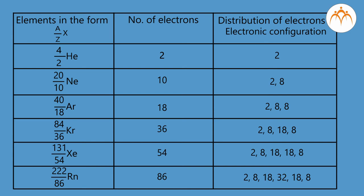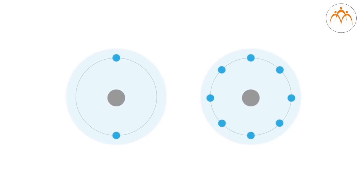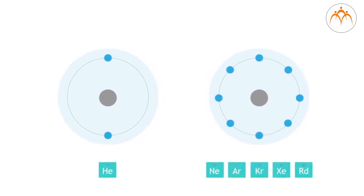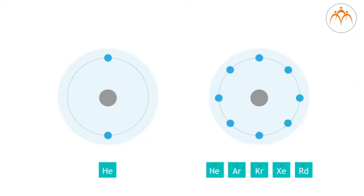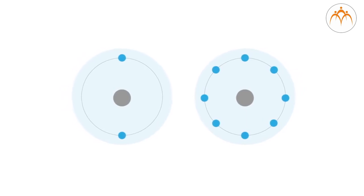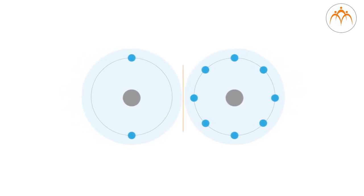These elements are called inert elements. Observe the distribution of electrons: except helium, all other elements contain 8 electrons in their outermost orbit or shell. Helium contains 2 electrons in its outermost orbit — a duplet in the case of the first shell, and an octet in the case of the second, third, fourth, and fifth shells being complete for their corresponding outermost shell. Atoms of these elements are stable as they do not have to give, take, or share electrons to complete a duplet or octet.